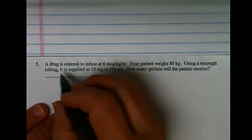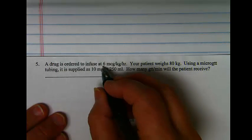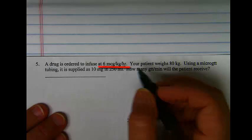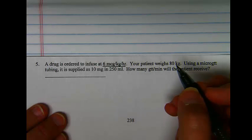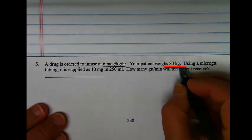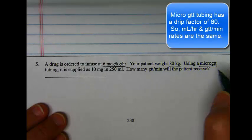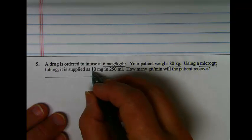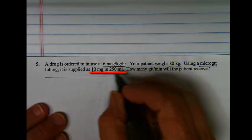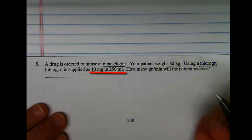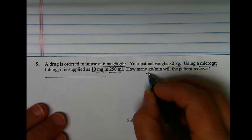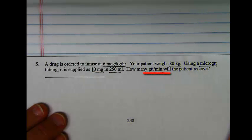In question number five, a drug is ordered to infuse at 6 micrograms per kilogram per hour. Your patient weighs 80 kilograms using micro drip tubing and a supply of 10 milligrams in 250 milliliters. How many drops per minute will the patient receive?